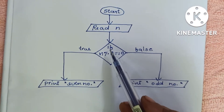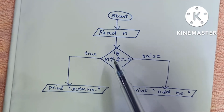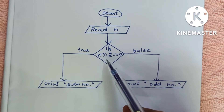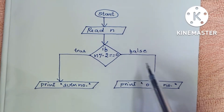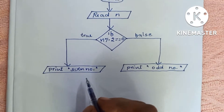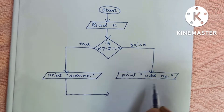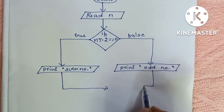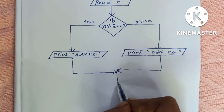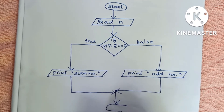So, if the condition is true it prints even number, and if the condition is false it prints odd number. Finally, combine both output branches with the stop statement, which is also written within an oval shape.